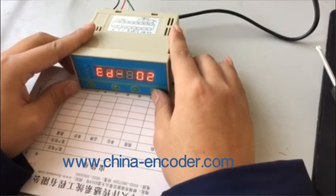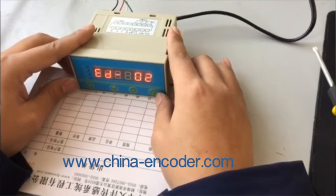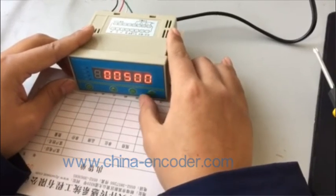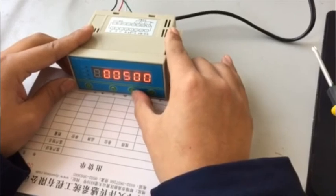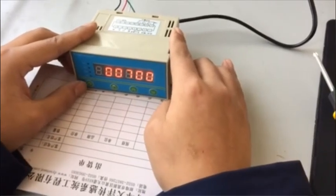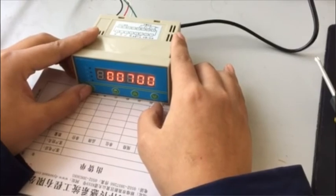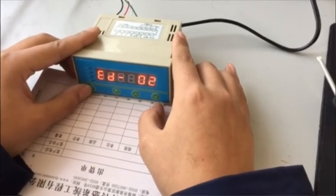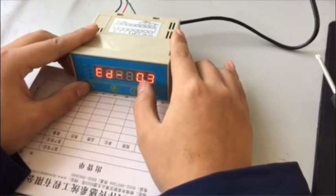Press K1 to switch to ED02. Similarly, press K4 to enter. Then press K4 to move the flashing position. And press K3 to modify the value. Press K1 to confirm. Then press K1 to switch to ED03.